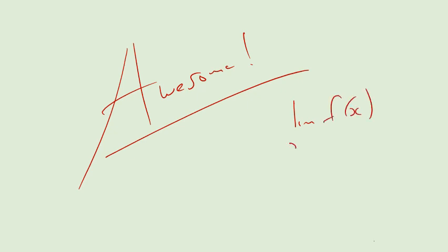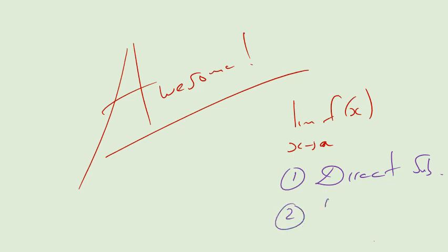This has been a pretty awesome lesson. When faced with the limit of f of x as x approaches a: step one, direct substitution — if you get a nice number, the function is well-behaved and continuous, that's the limit. Step two, if you get an unpretty value like 0 over 0, factorize, things cancel out, function becomes pretty, do a direct substitution and get a finite number. What's next beyond these two steps? That's coming up.